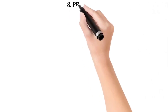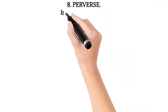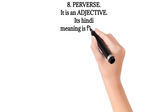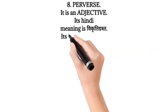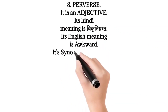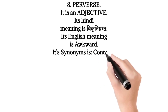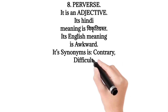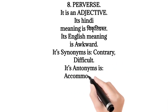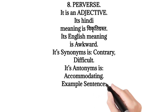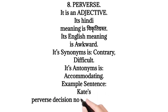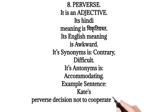8. Perverse — it is an adjective. Its Hindi meaning is 'vikritigrist'. Its English meaning is 'awkward'. Its synonyms are contrary, difficult. Its antonym is accommodating. Example sentence: Kate's perverse decision not to cooperate held good.